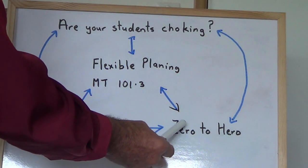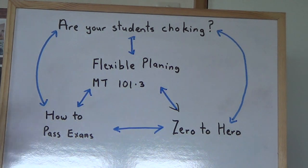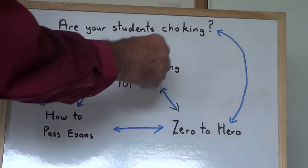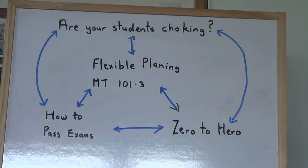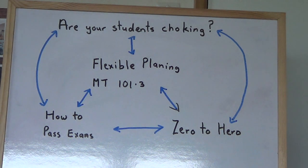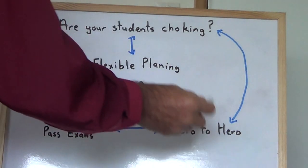This Zero to Hero video is about a class and a situation where amazing things happen. It's got all the elements of flexible planning. I use flexible planning, I also use spiraling — where I spiral through my lessons and I spiral through my topics. It's all down there, so you need to know that.